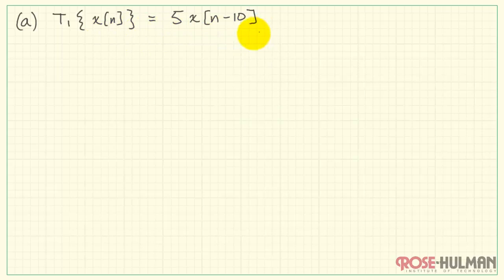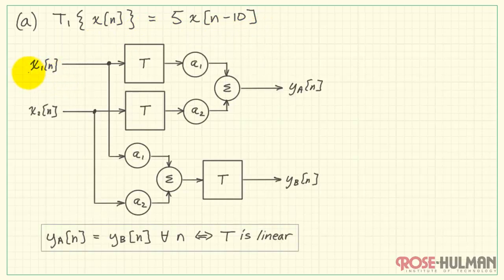All right, the first system we're looking at, T1, is 5 times X of N minus 10. Let's pass X1 through the system, multiply it by the scale factor A1, and then do the same thing with X2. YA is the sum of these two results.